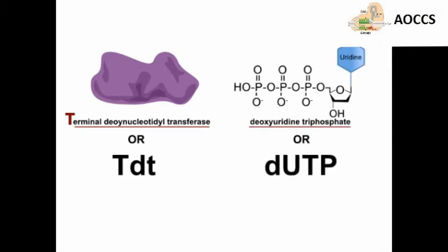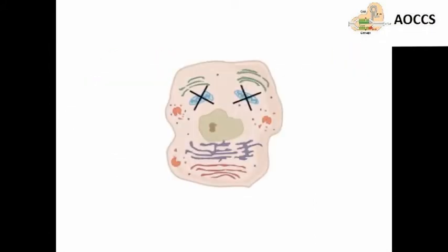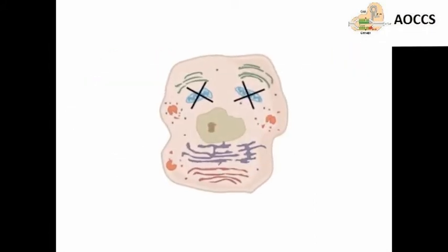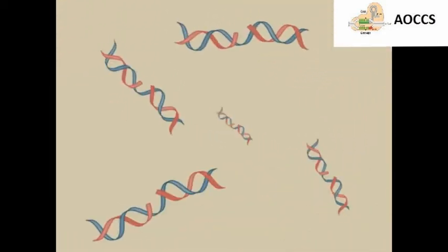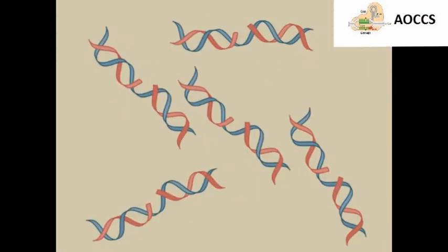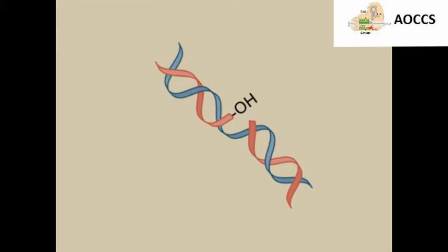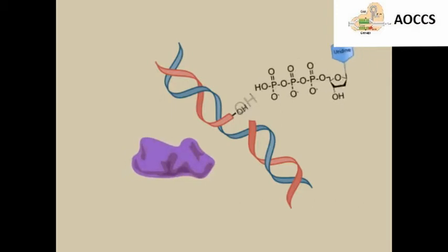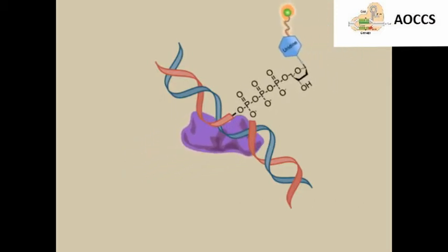In order to understand the TUNEL reaction, let's go back to the apoptotic cells with DNA fragments. These nicked fragments have free 3' hydroxyl groups. Once you add the TUNEL reagents to a sample containing apoptotic cells, the fluorescently labeled dUTPs attach to these 3' hydroxyl groups with the help of the catalyst enzyme TdT.